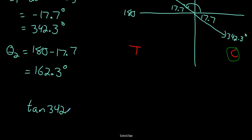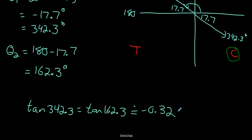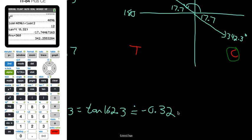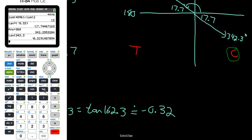We can verify: tan(342.3°) ≈ −0.32 and tan(162.3°) ≈ −0.32. Both angles give the same tan ratio of approximately negative 0.32, confirming our answers.